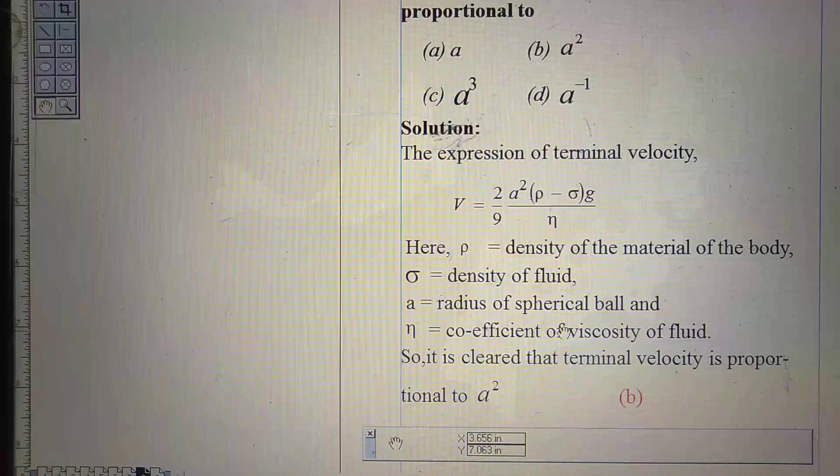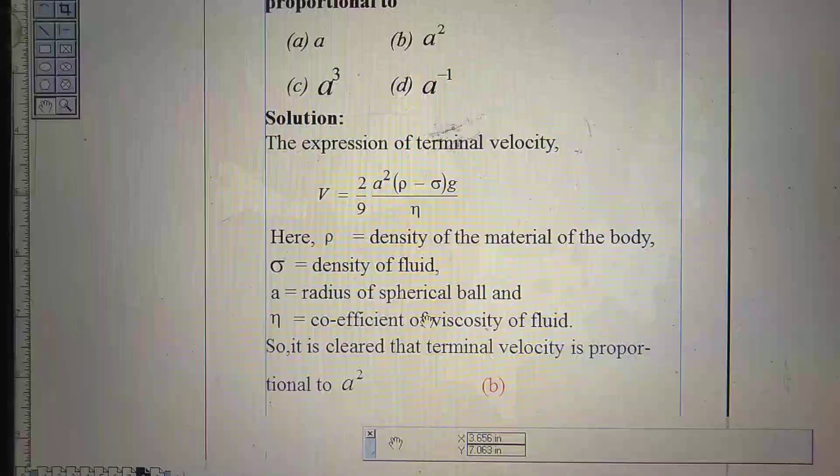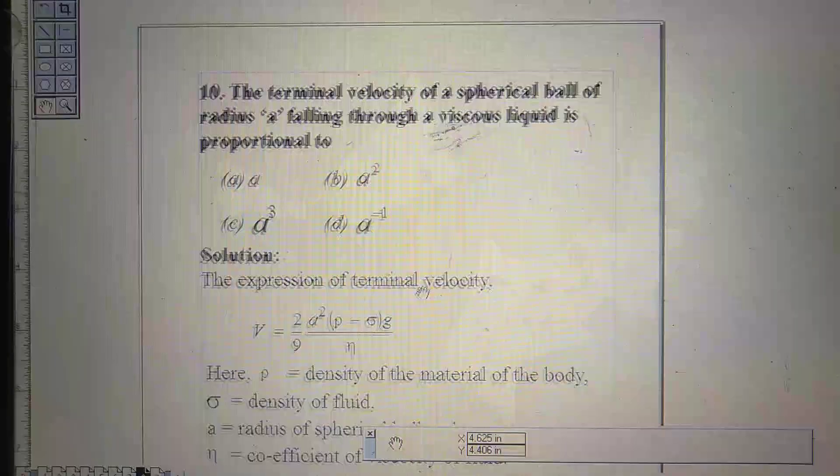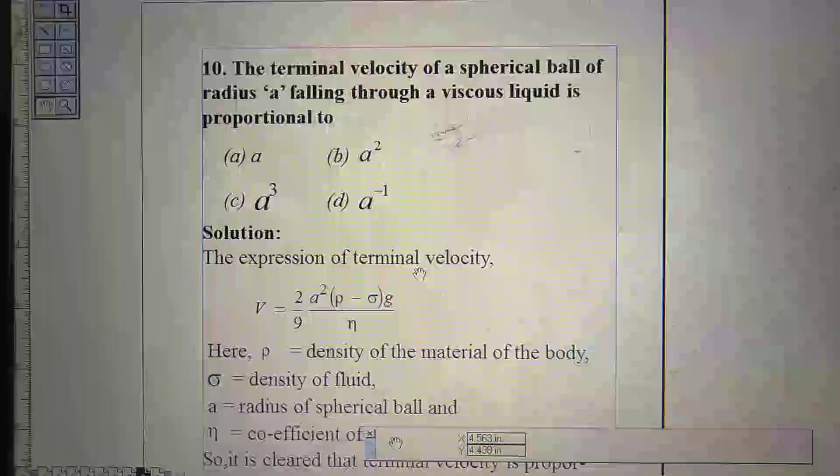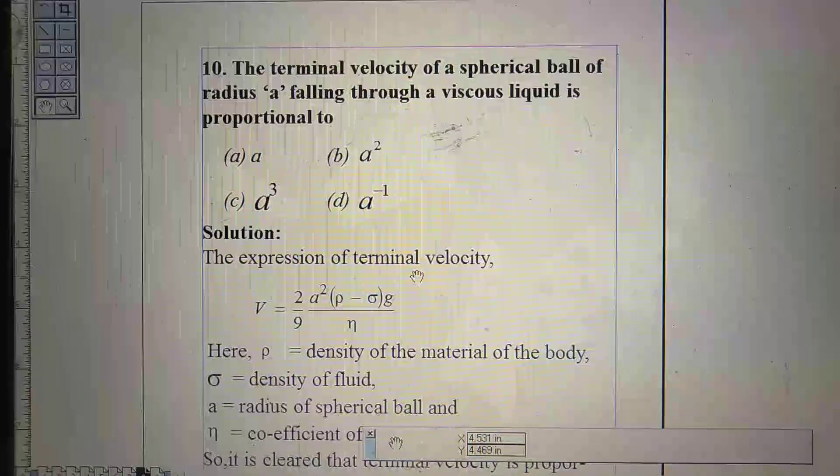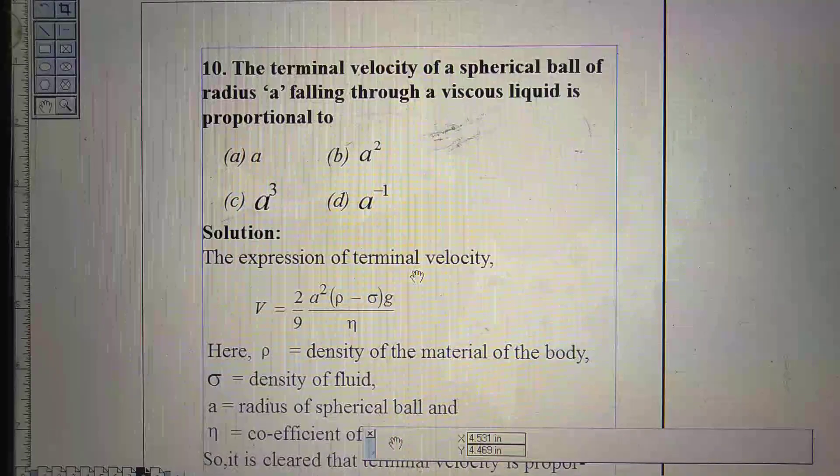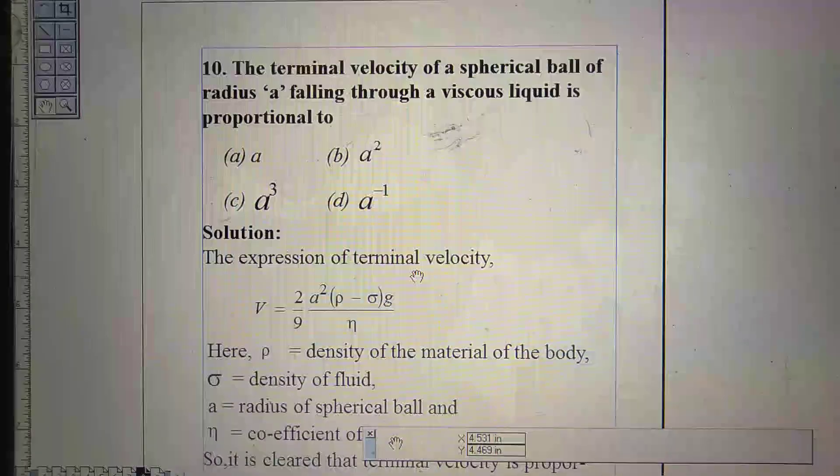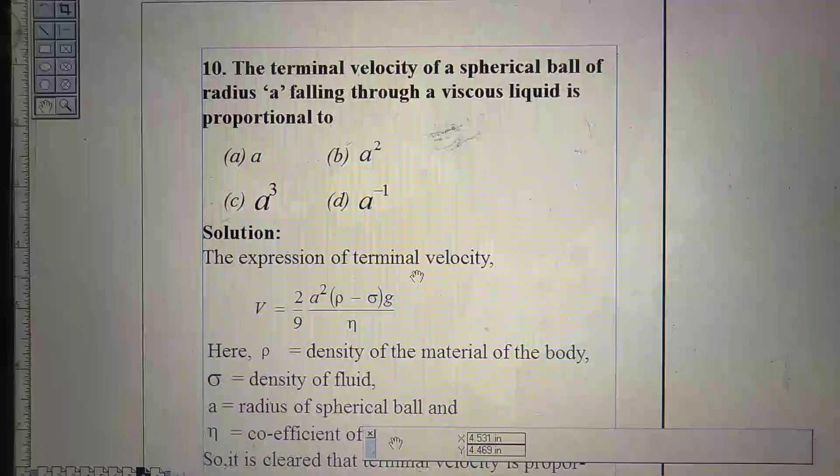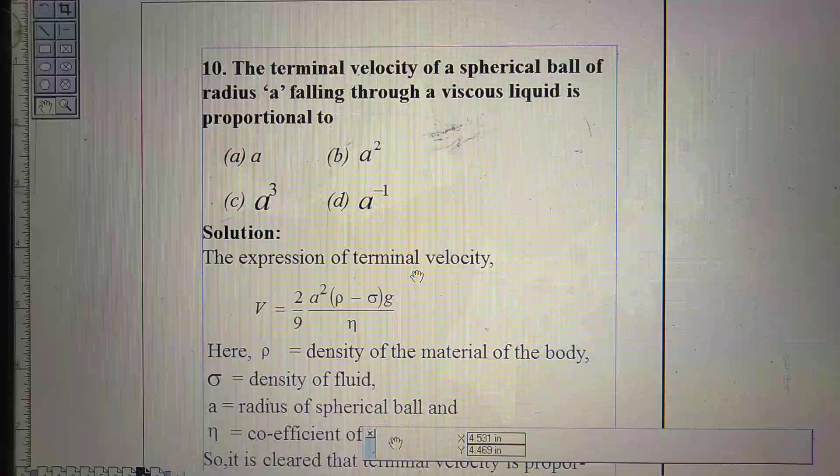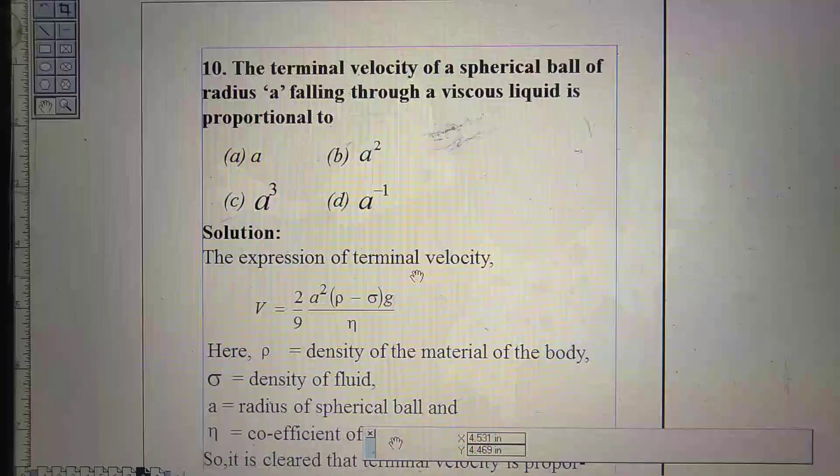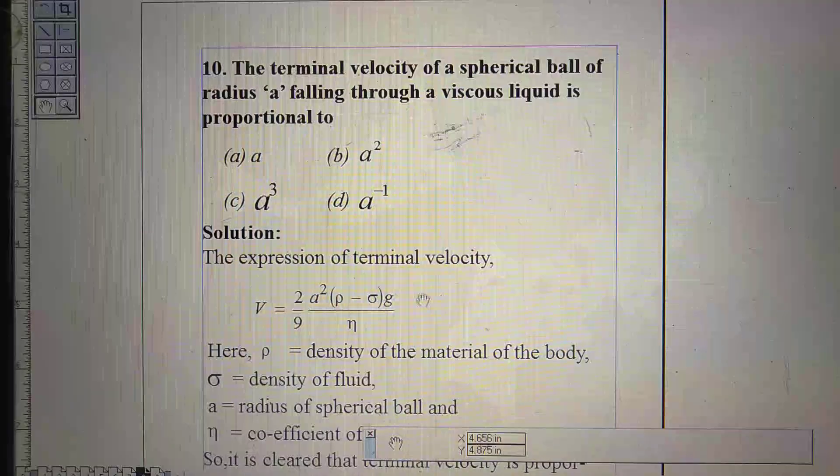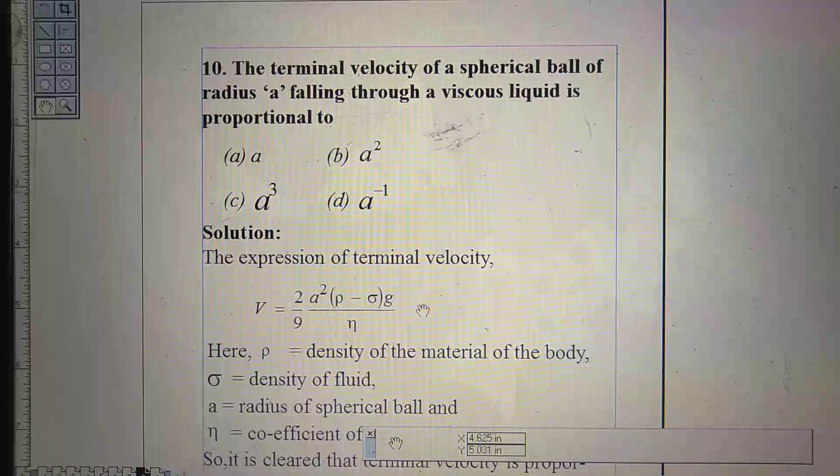Last question, fifth question: The terminal velocity of a spherical ball of radius A falling through a viscous liquid is proportional to option A, A, option B, A square, option C, A cube, option D, A to the power minus 1.